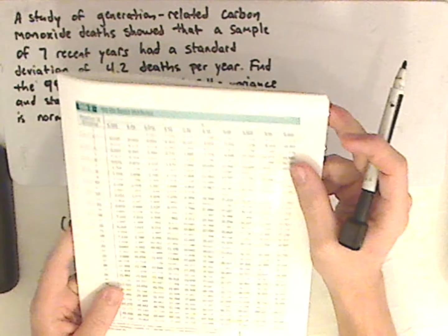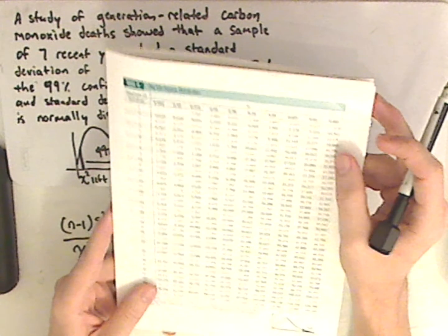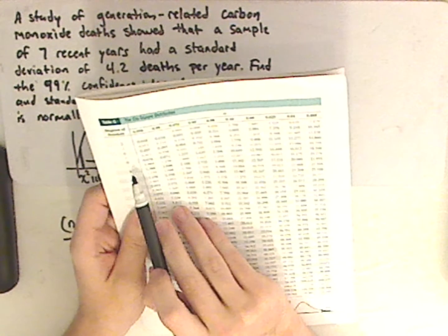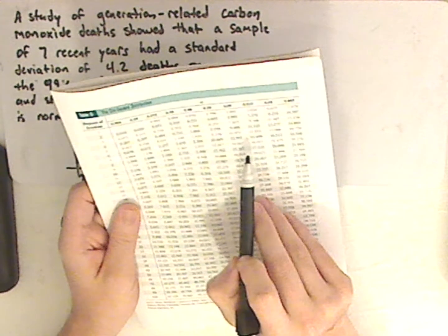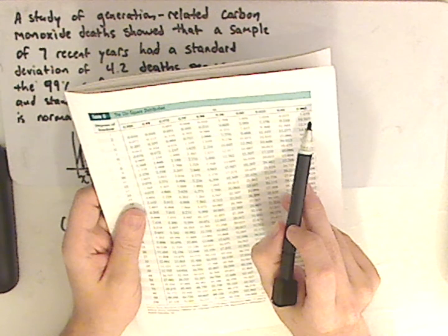The degrees of freedom would be n minus 1. So your sample size is 7, so 7 minus 1, which is 6, and then look at the top, which is 0.005.